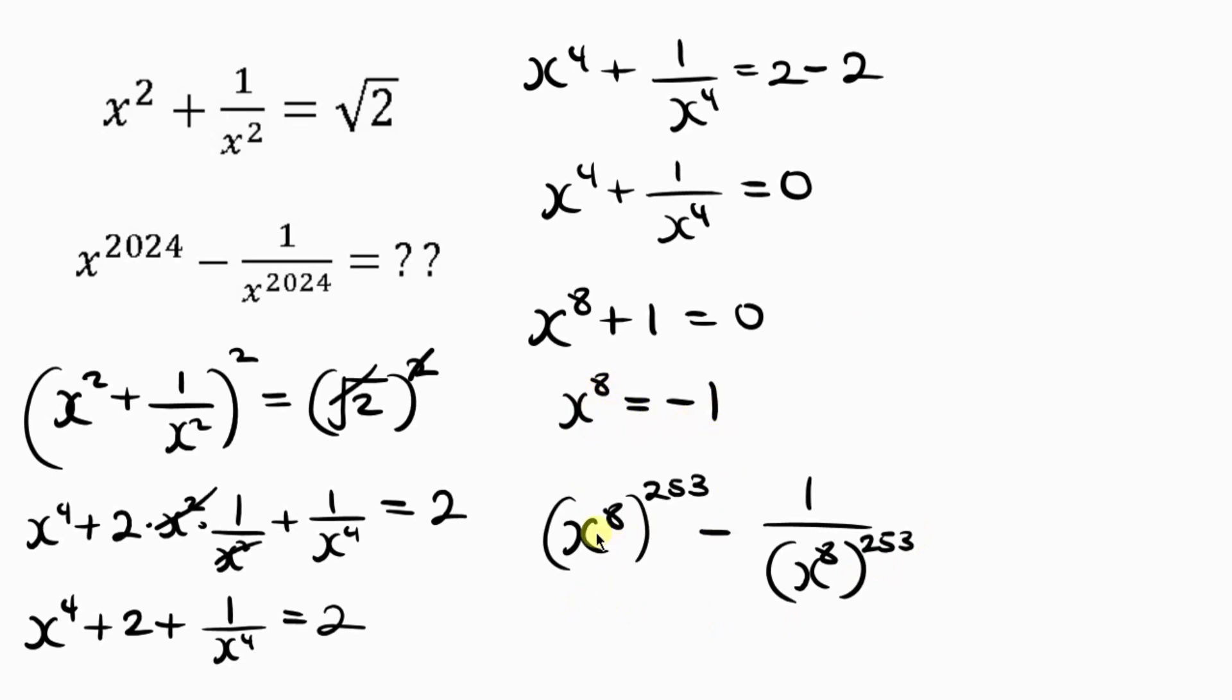Now wherever I see x to power 8 I'm going to be putting negative 1 there. So this is x to power 8, I'll be putting negative 1 and I'll raise this to 253 minus 1 over negative 1 to the power of 253.